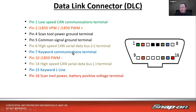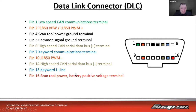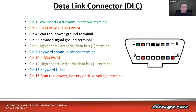Pin 7 is K-line, and sometimes pin 15 is used for a two-wire keyword setup. Pin 16 is always power. If you know you have power and ground, that's a good place to start — if you don't have power at pin 16, that's where you want to begin, because it's often linked to the ECM fuse.